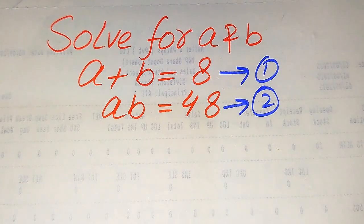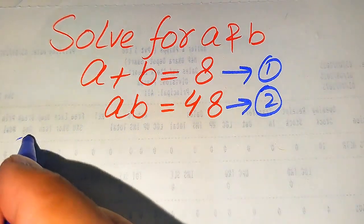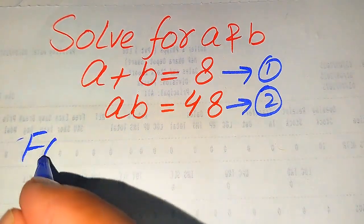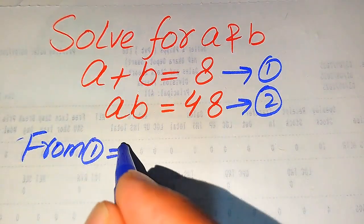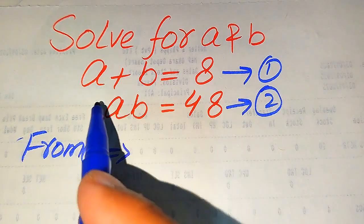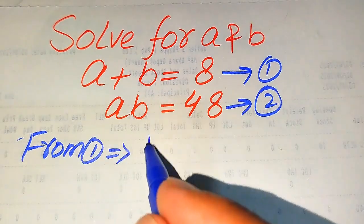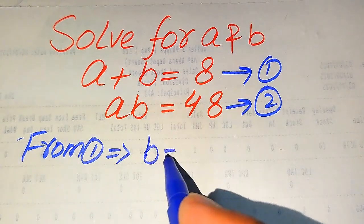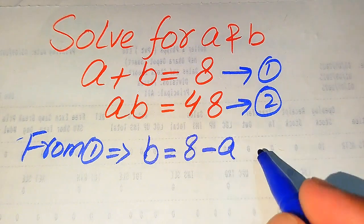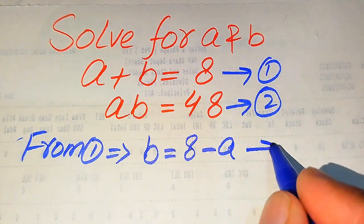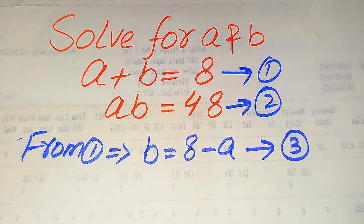First we need to focus on equation number one. Equation number one implies that we need to move a to the right hand side and we get the value of b is equals to 8 minus a. We call this equation number three.